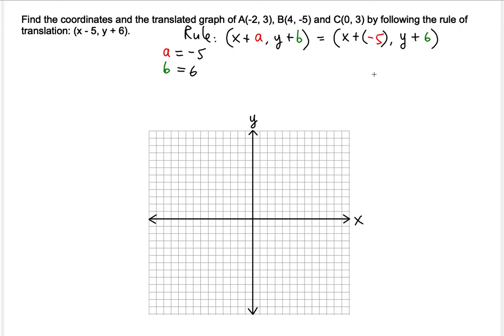So all we need to do, we need to basically add a and b respectively to each x and y. So A prime is going to be for the x value minus 2 plus negative 5. So that's the same thing as minus 5. And then the y will be 3 plus b plus 6. So that's going to give us minus 7 and then 9.